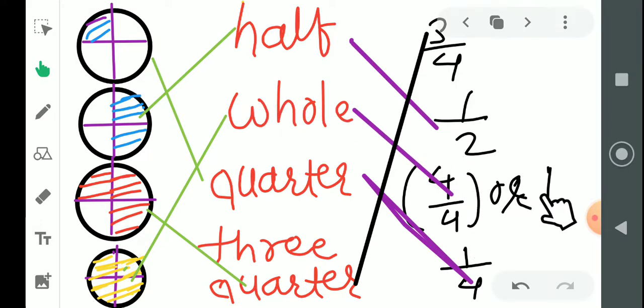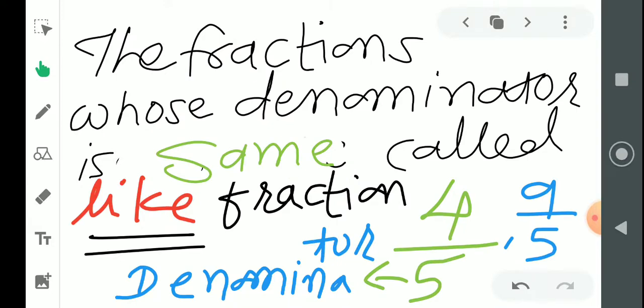Next, quarter means one-fourth, which is 1/4. Three-quarters means three-fourths, which is 3/4. So we have understood the complete matching. Now let's move ahead.